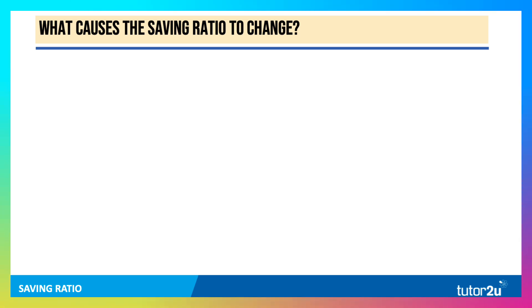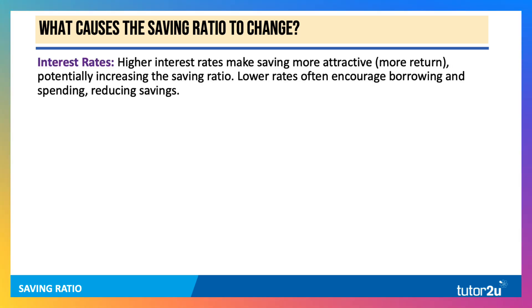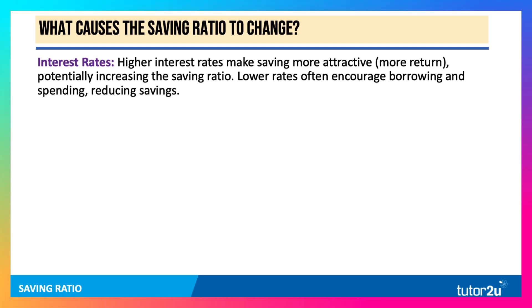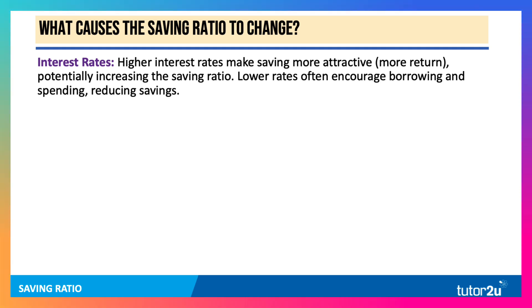So what causes the savings ratio to change? First, interest rates. When interest rates are relatively high, that makes saving more attractive, potentially increasing the savings ratio. When interest rates are low, as they have been for much of the period, that encourages people to borrow money. Borrowing money is dis-saving, reducing their savings.